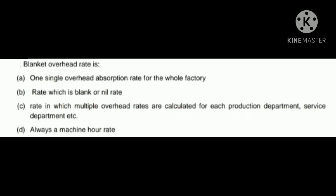Next question: blanket overhead rate is — A) one single overhead absorption rate for the whole factory, B) a blank or nil rate, C) multiple overhead rates calculated for each production and service department, D) always a machine hour rate. The correct answer is A: blanket overhead rate is one single overhead absorption rate for the whole factory.